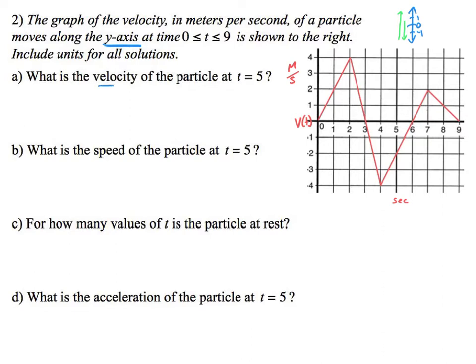I want the velocity of the particle at t equals 5. That is basically just asking what's v of 5. So we go to the graph at 5, and that's the dot right there. The velocity would be negative 2 because this is a velocity graph at t=5, so the velocity at 5 is negative 2 meters per second.